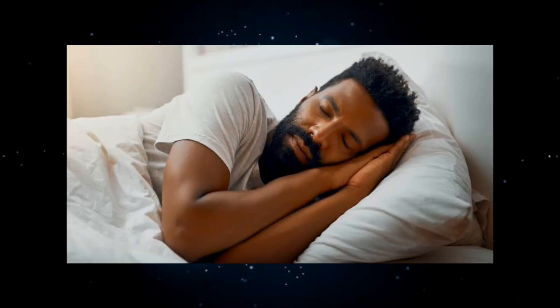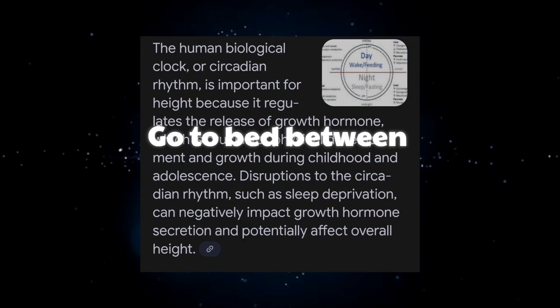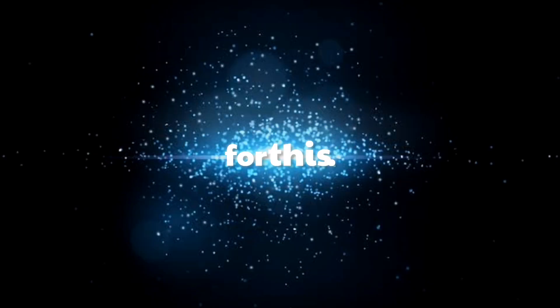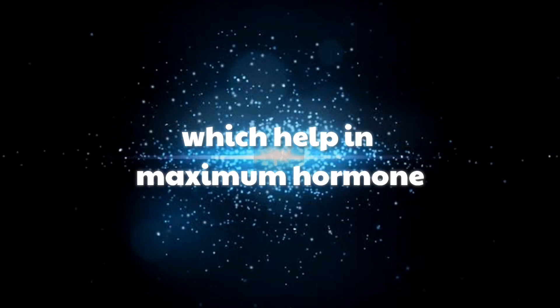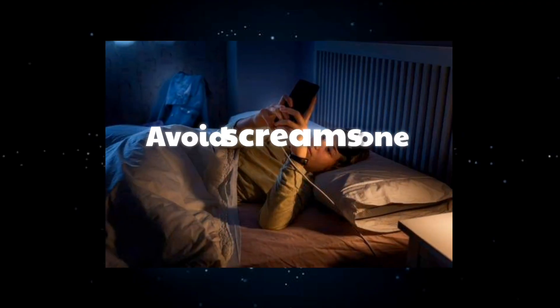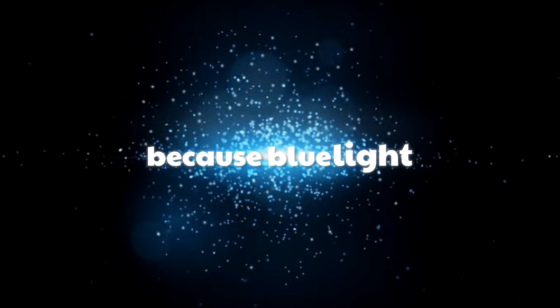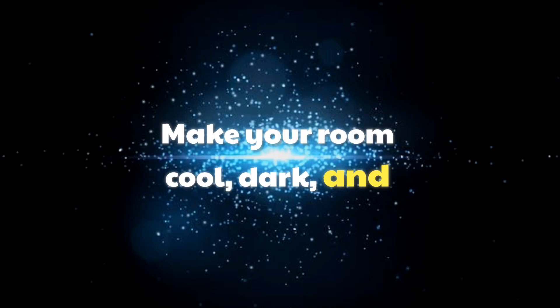Two, sleep, the growth hormone factory. Sleep isn't just rest. It's when your body pumps out the most HGH. So follow these things for better sleep. Go to bed between 10 to 11 p.m. Take 8 to 10 hours of deep sleep, which helps in maximum hormone release. Avoid screens one hour before bed because blue light kills melatonin. Stick to a consistent bedtime. Make your room cool, dark, and quiet.